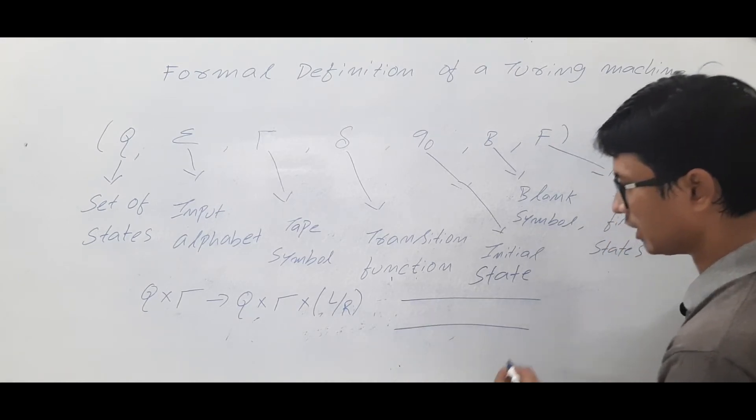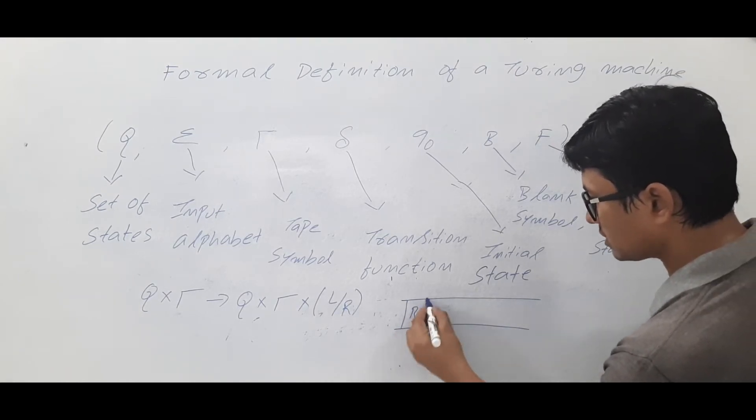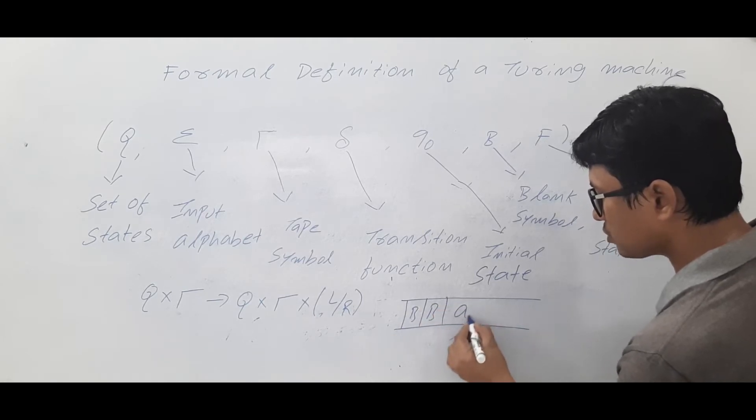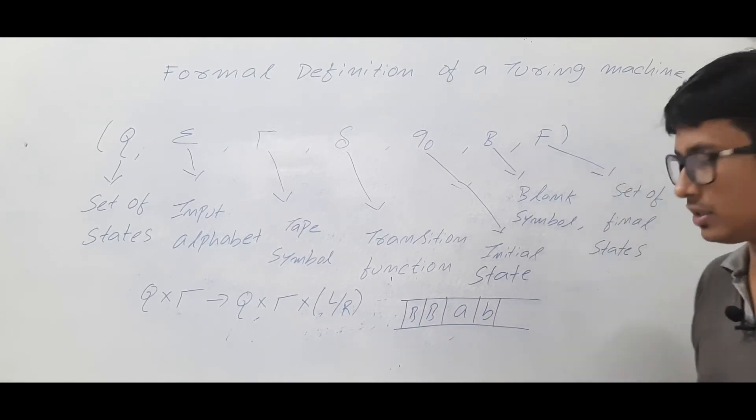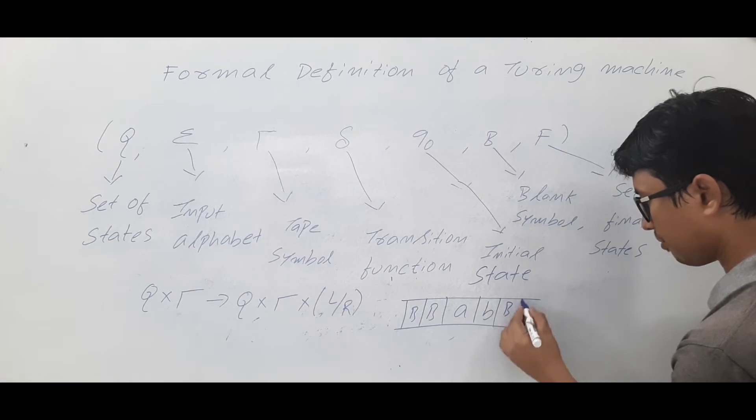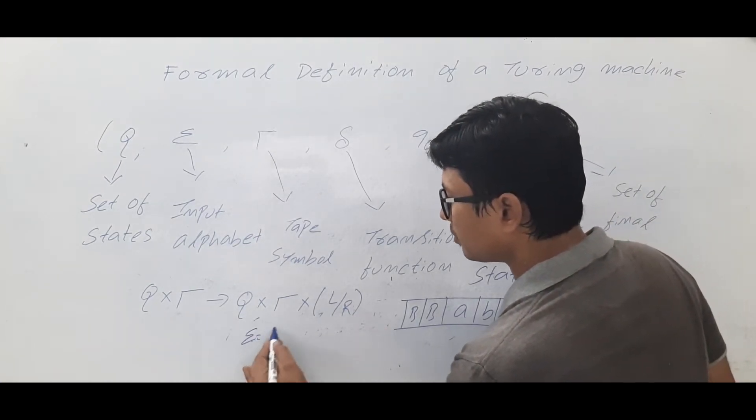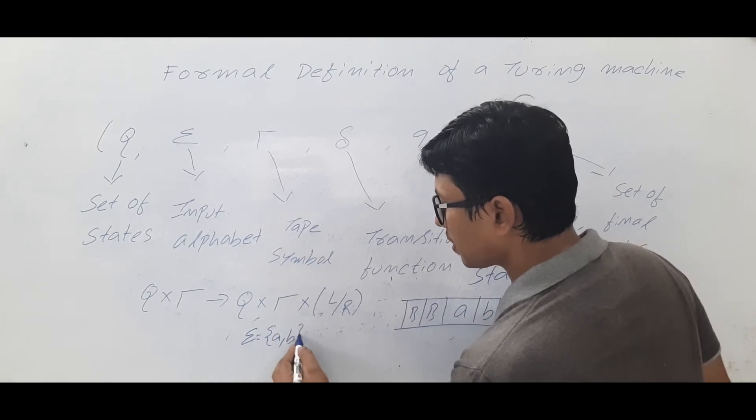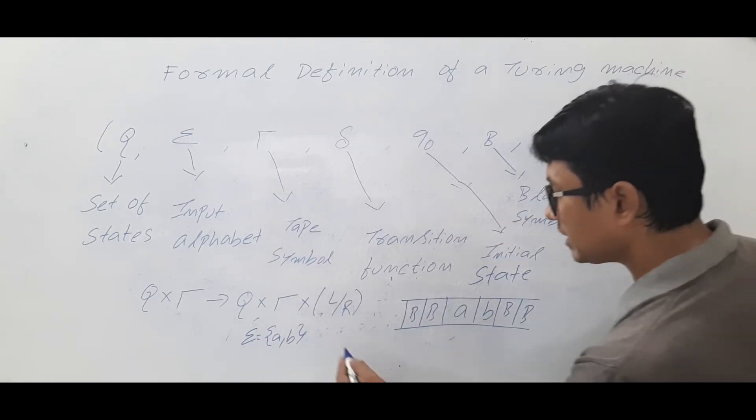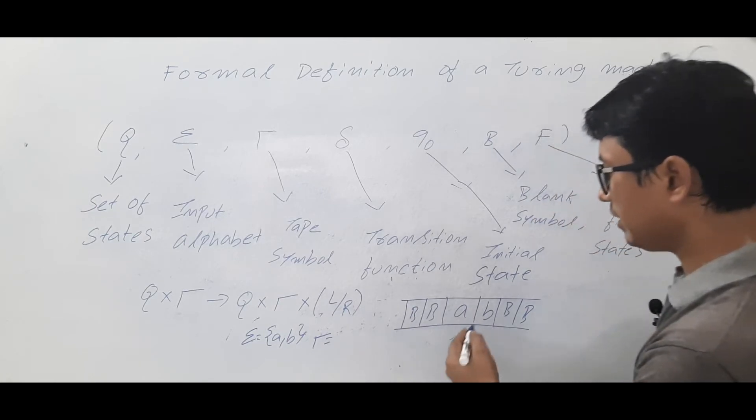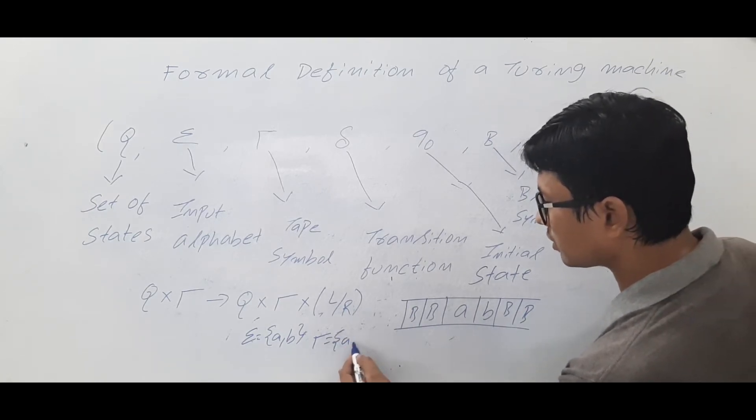I have a tape which consists of blank symbols, and I have stored a string called ab on the tape, and I have blank symbols to the right of the string also. I have my input alphabets a comma b, and my tape symbols - even input alphabets are also allowed on the tape.